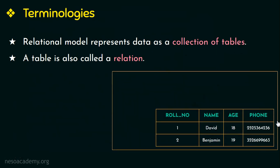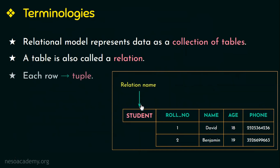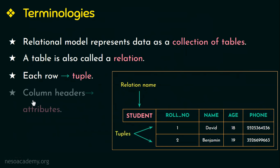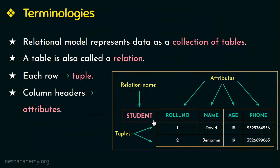So a relational model represents data as a collection of relations. In this table, student is the relation name or the table name. Each row in the table is called a tuple — in this relation student, we have two tuples or two rows. And each column or column header is called an attribute or field — in this relation student, we have four attributes or four columns.